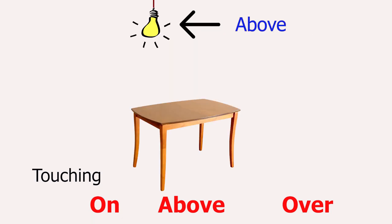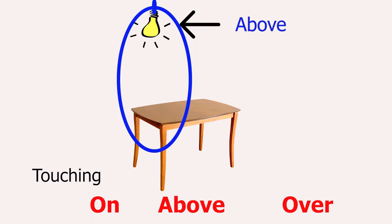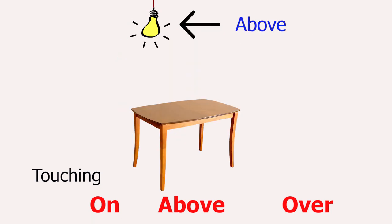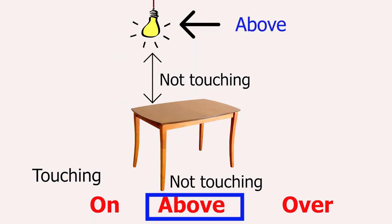And if something is above the table but not touching, then use 'above'. So this calf is above the table, not touching.